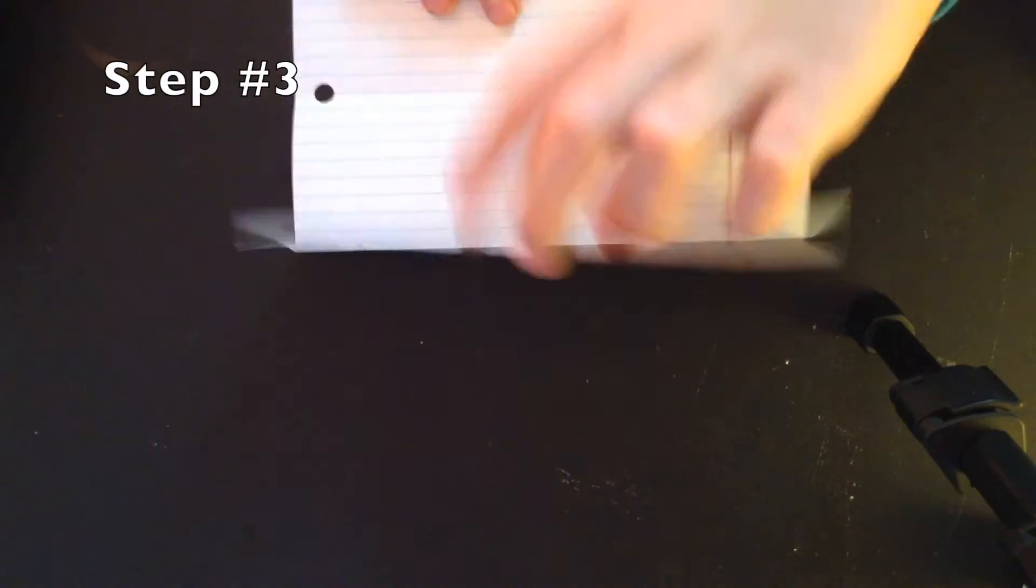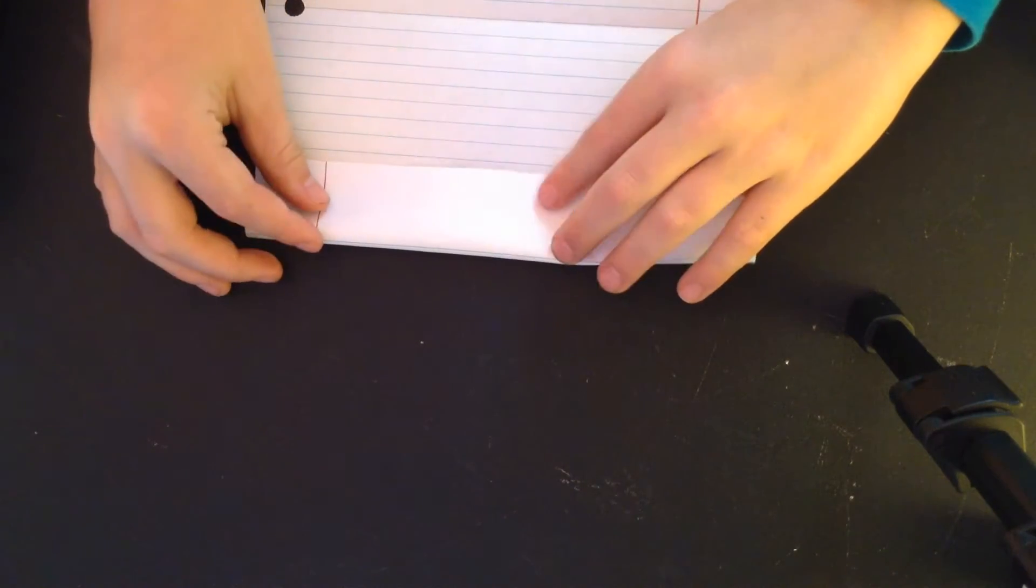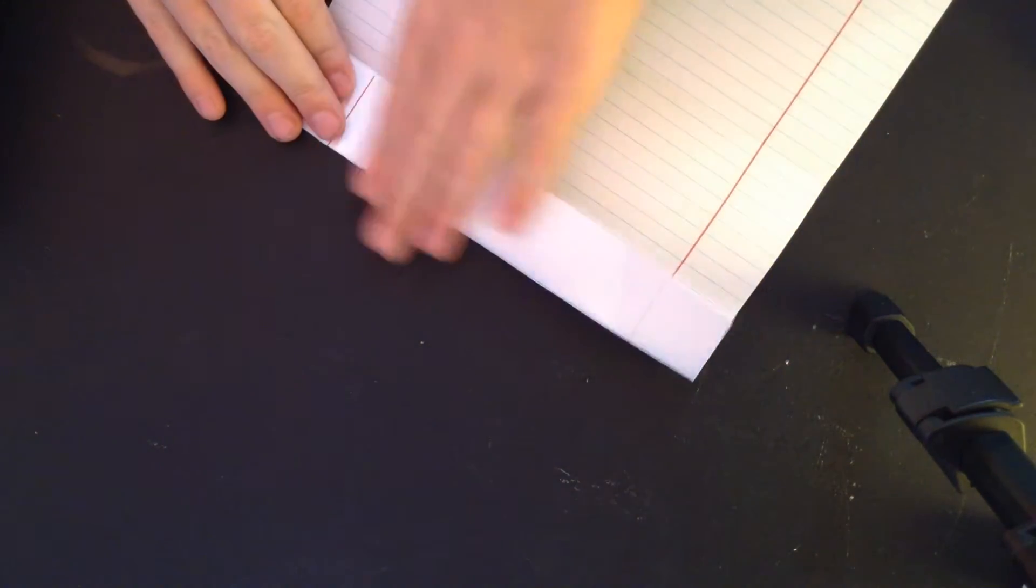Alright, for step number three, you want to unfold this. Fold this back down so there's another one that's creased right there. Fold it again onto that line, and wha-bang! On to step number four.